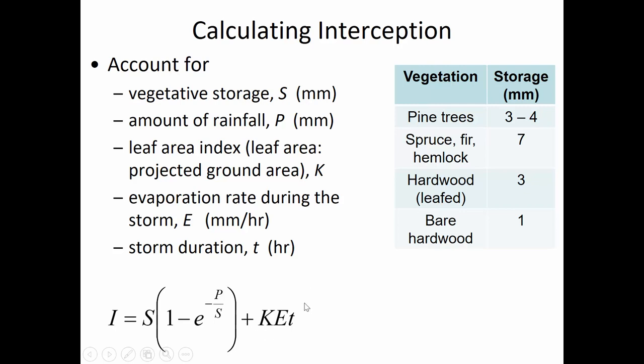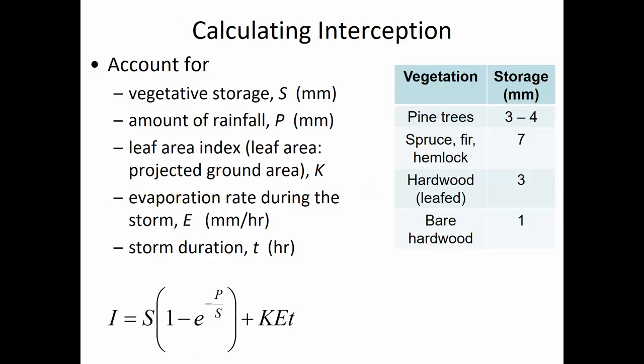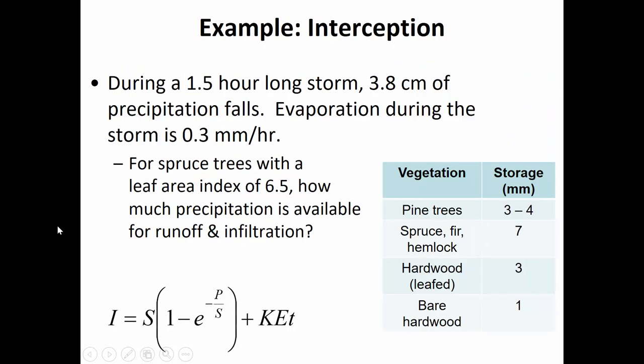The secondary term accounts for evaporation during the storm. Even though relative humidity is higher during a storm, if water is spread out in really thin layers on a leaf, that can increase evaporation — so it's not insignificant. Let's try this formula: we have a storm that's 1.5 hours long with 3.8 centimeters of precipitation and an evaporation rate during the storm of 0.3 millimeters per hour. We want to find how much precipitation is available for runoff and infiltration — that's precipitation minus interception.